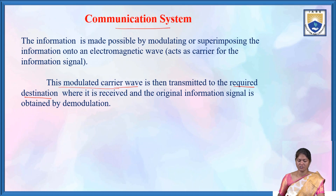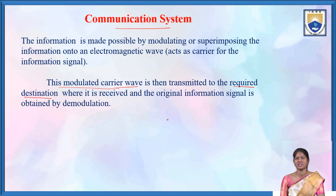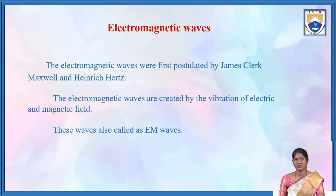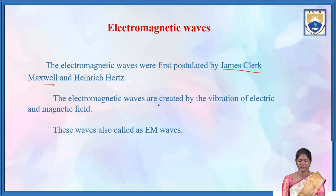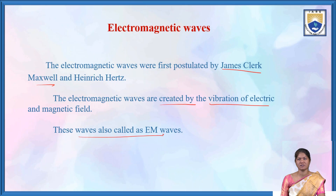The modulated carrier wave is transmitted to the required destination, and after demodulation we can get the original information signal. Electromagnetic waves were first postulated by James Clerk Maxwell and Heinrich Hertz. Electromagnetic waves are created by the vibration of electric and magnetic fields.